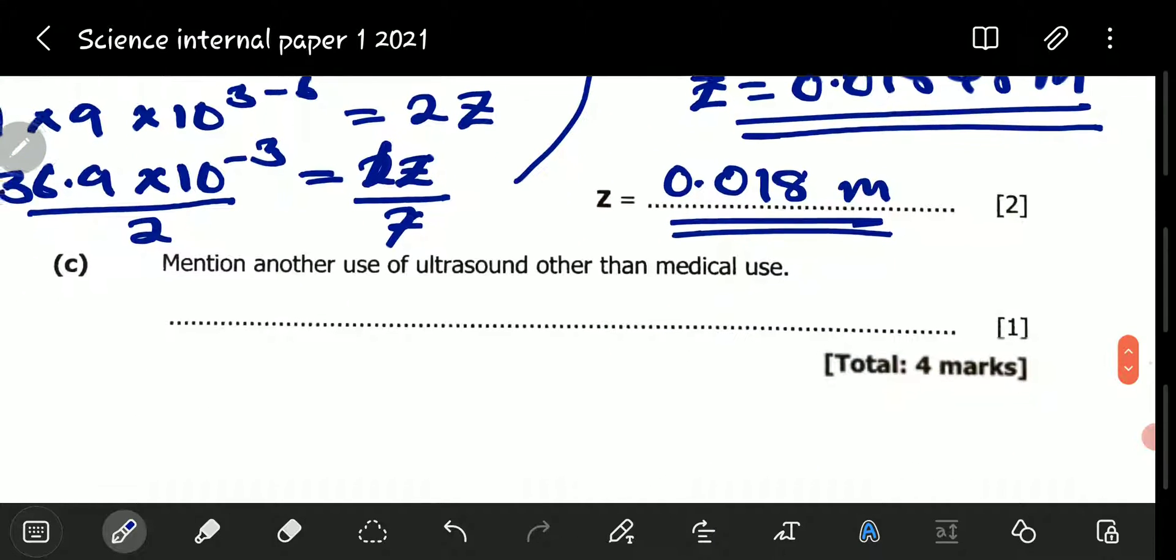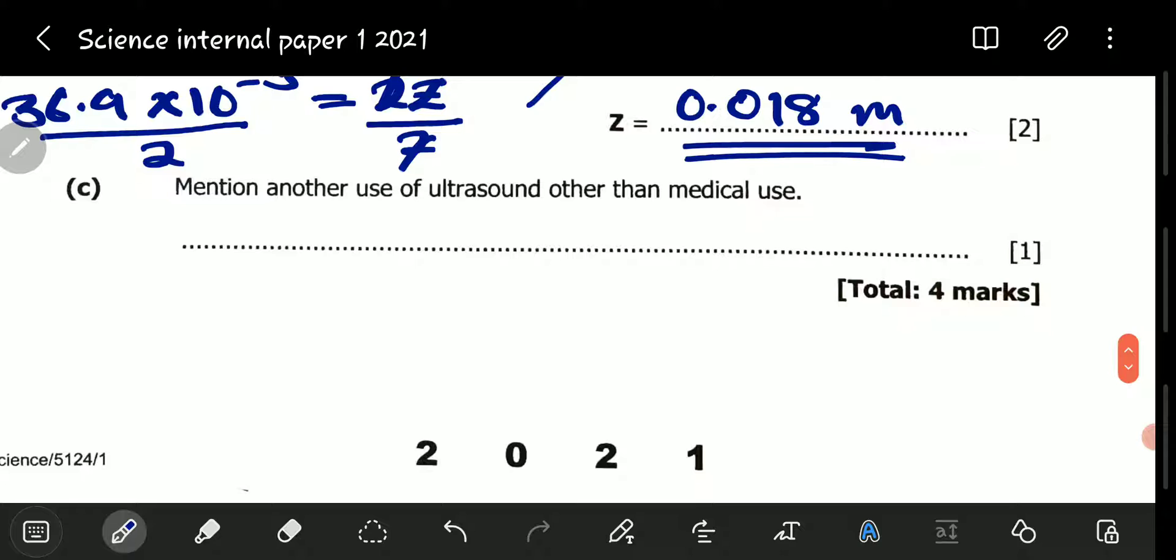We proceed. Mention another use of ultrasound other than medical use. So, here, they don't want any use to do with the hospital, medicine, and so on. Because we know that most people are going to rush and talk about scanning pregnant women, and so on and so forth. So, here, they do not want all that. You need to talk about other things. For example, it is used to measure the depth of the sea.